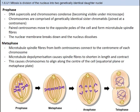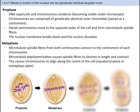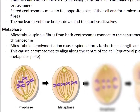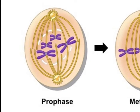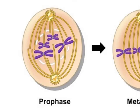In the M phase, we first have mitosis. Mitosis consists of four specific stages, each fairly easy to spot in a micrograph: prophase, metaphase, anaphase, and telophase. Remember that mitosis occurs in the nucleus — the whole point is to get two separate copies of the DNA. In prophase, DNA coils up super tightly and the chromosomes condense to the point where they become visible under a microscope. Chromosomes are comprised of genetically identical sister chromatids joined at a centromere. Then the paired centromeres move to opposite poles of the cell and form microtubule spindle fibers. Additionally, the nuclear membrane breaks down and the nucleus dissolves. It's like the nucleus is getting itself organized for the rest of the process.